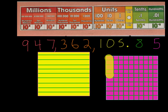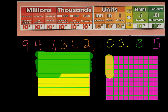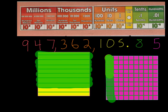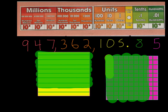Now I'll fill in eight tenths by highlighting eight of those rows — one, two, three, four, five, six, seven, eight. That gives me eight tenths and five hundredths, which is eighty-five hundredths total. I could also just fill in eighty-five individual hundredths squares — counting up to eighty, then adding five more — and that's the same amount either way.